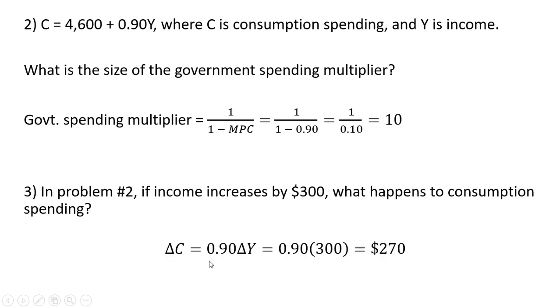The change in consumption will equal the marginal propensity to consume times the change in income. So 0.9 times the change in income of $300 means consumption spending will rise by $270.